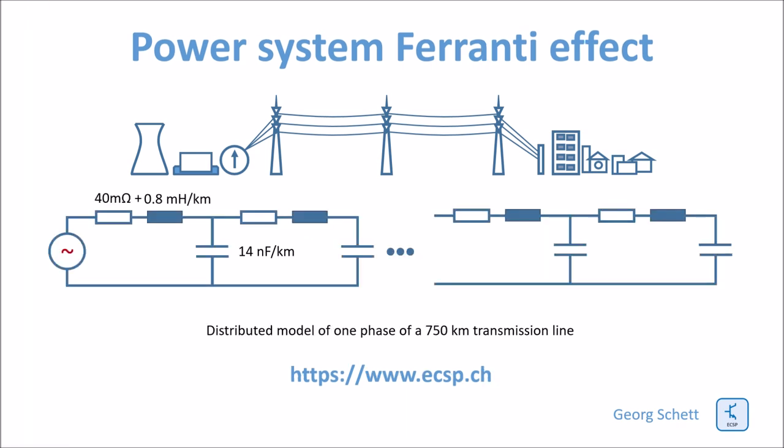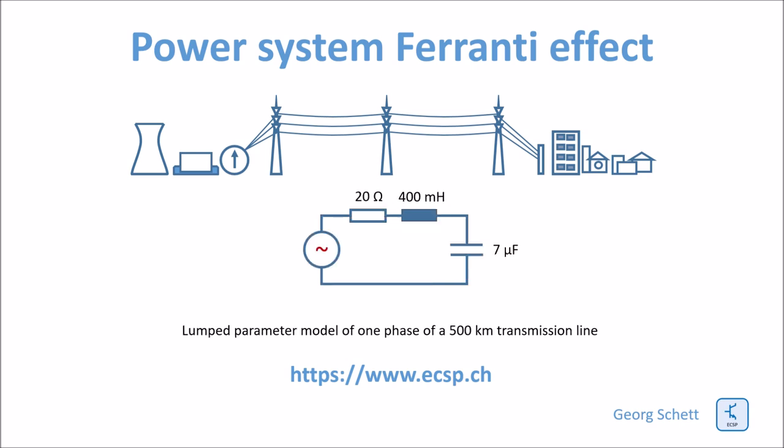The Ferranti effect has its root cause in the inductive and capacitive properties of a transmission line. A transmission line can be modeled as an infinitesimal series of LC circuits, each one slightly damped by an ohmic resistance. The resistance comes from the resistance of the wires. To explain the principle, let's look at just one of these line segments.